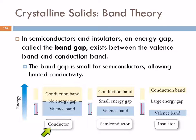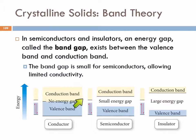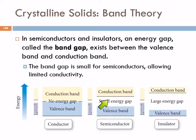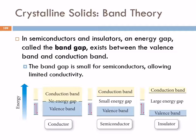In a conductor such as a metal, we have a valence band and a conduction band with no energy gap. The electrons can just move over into the conduction band and move around. In a semiconductor there's a small energy gap, so there is limited conductivity. Some electrons can get up into the conduction band if they have enough energy. The cool thing about semiconductors is that you can change their conductivity.